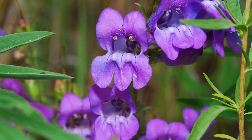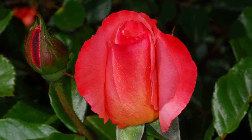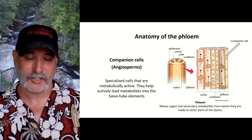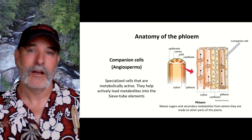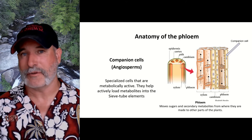Angiosperms are your flowering plants — like grasses, trees that flower like oak trees, sunflowers, roses. A tree that's not an angiosperm would be like a cypress, juniper, pine, or fir — some type of conifer. But angiosperms, which represent the vast majority of species, have these specialized companion cells right next to the sieve tube elements, and they're there to help load those sieve tube elements up.